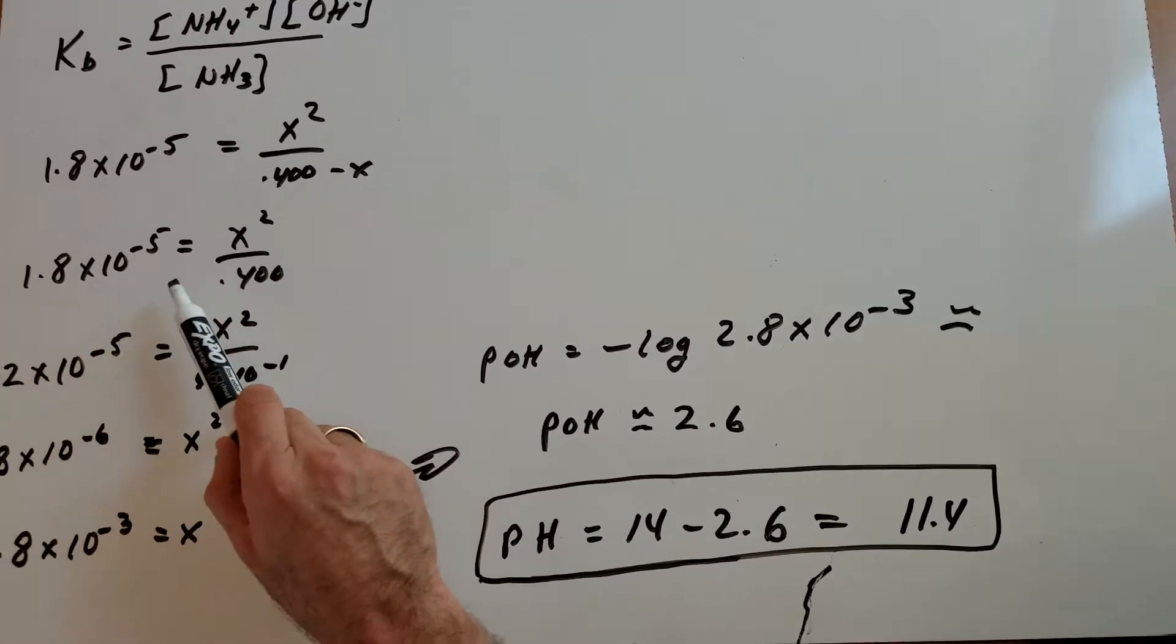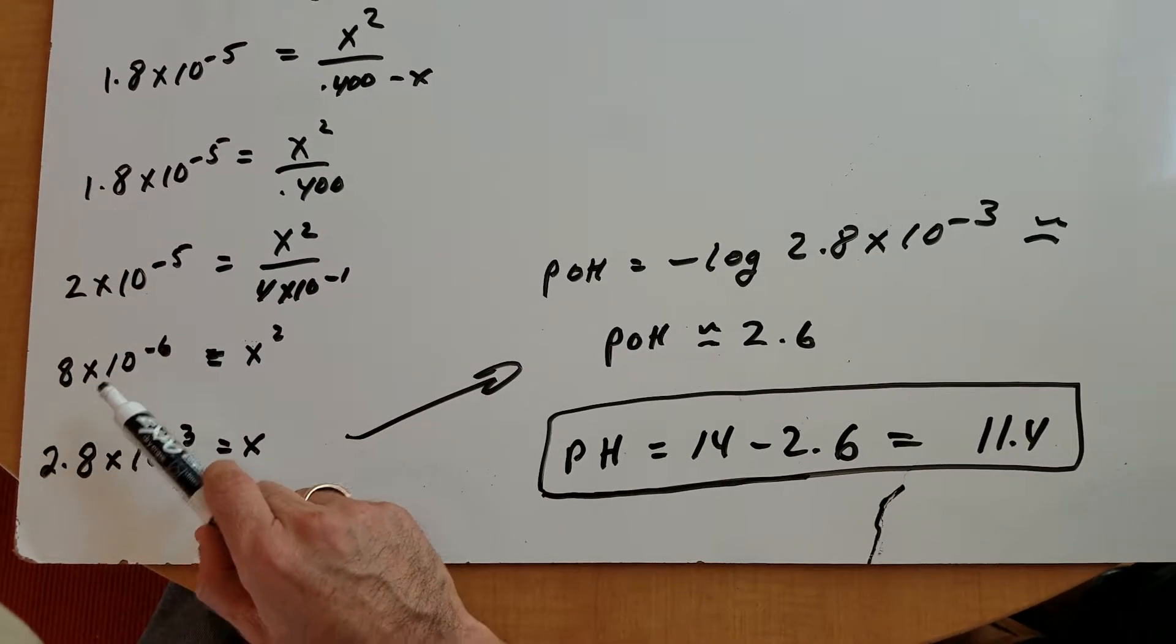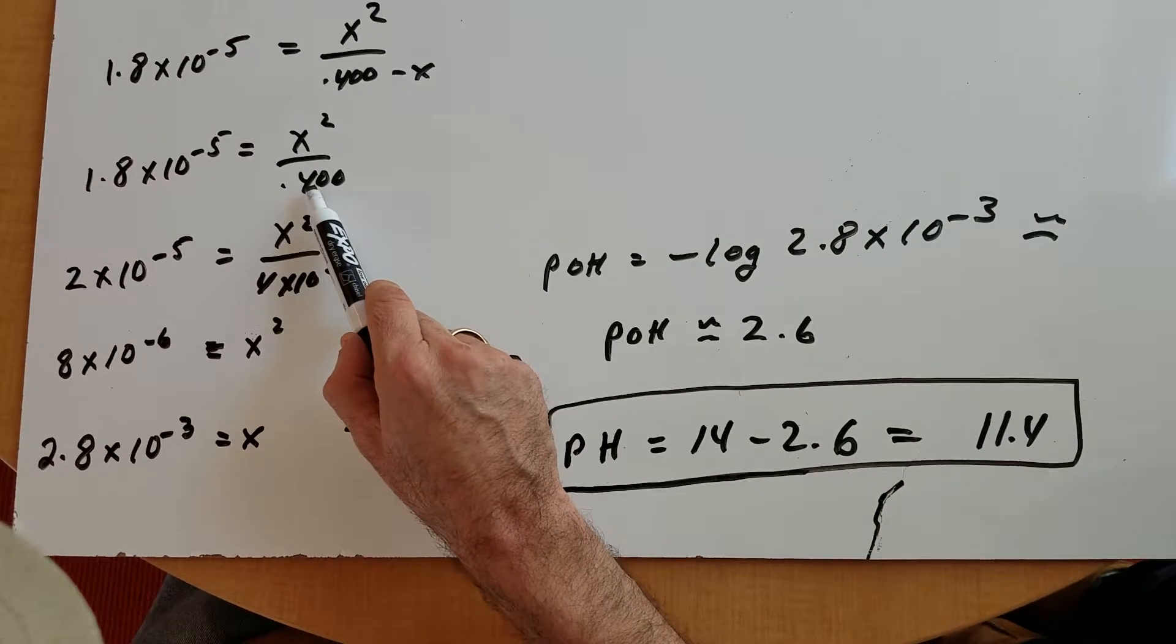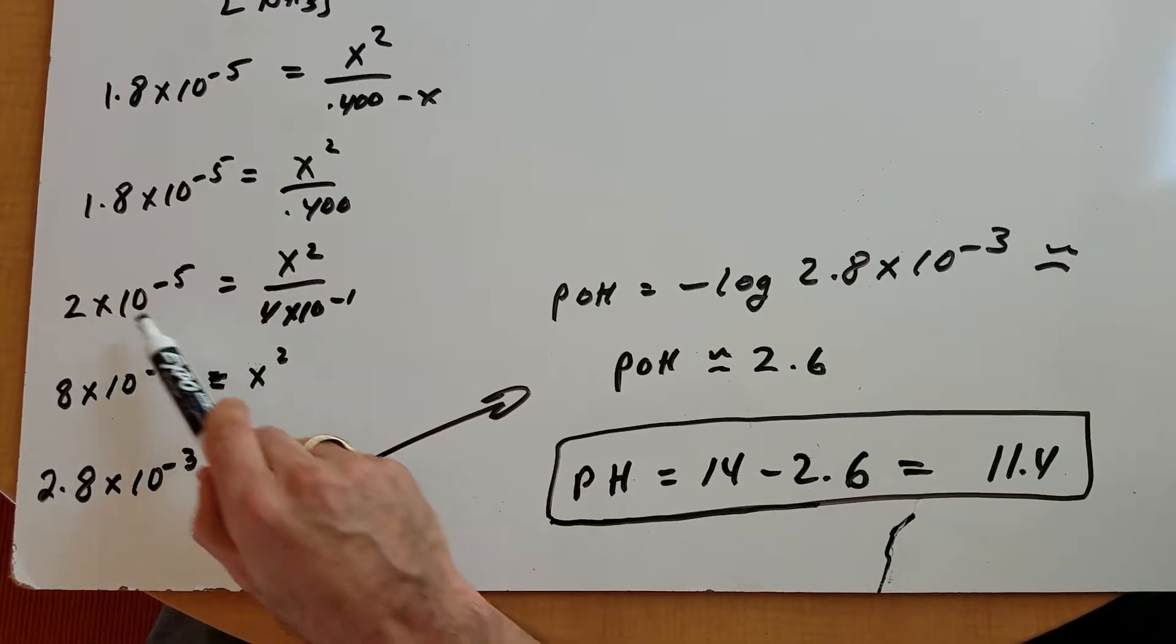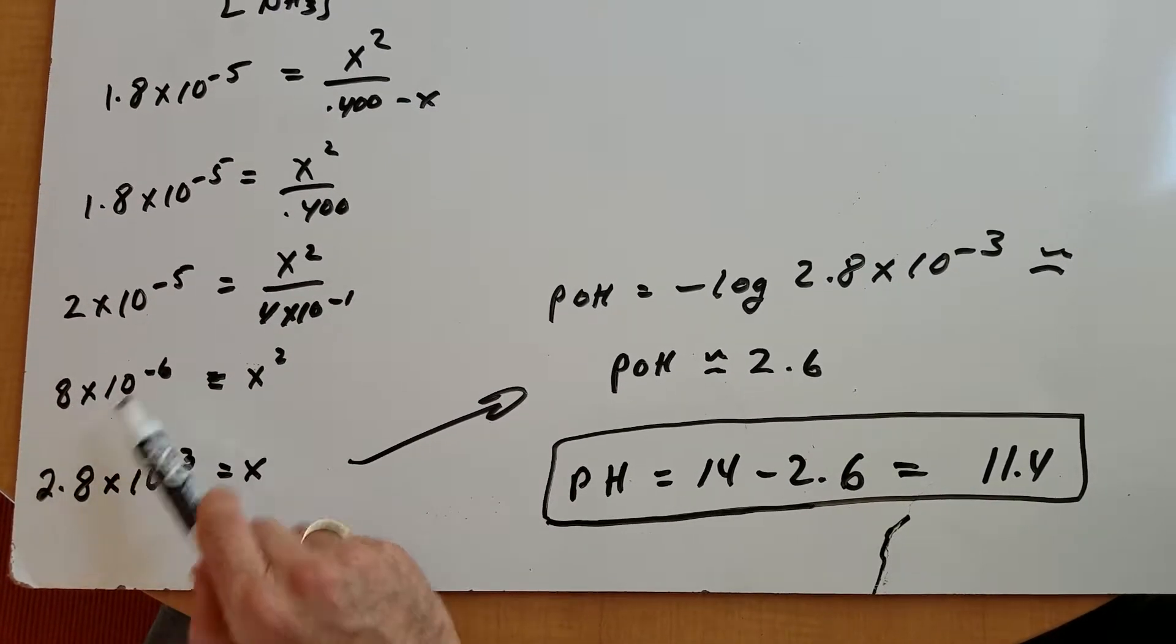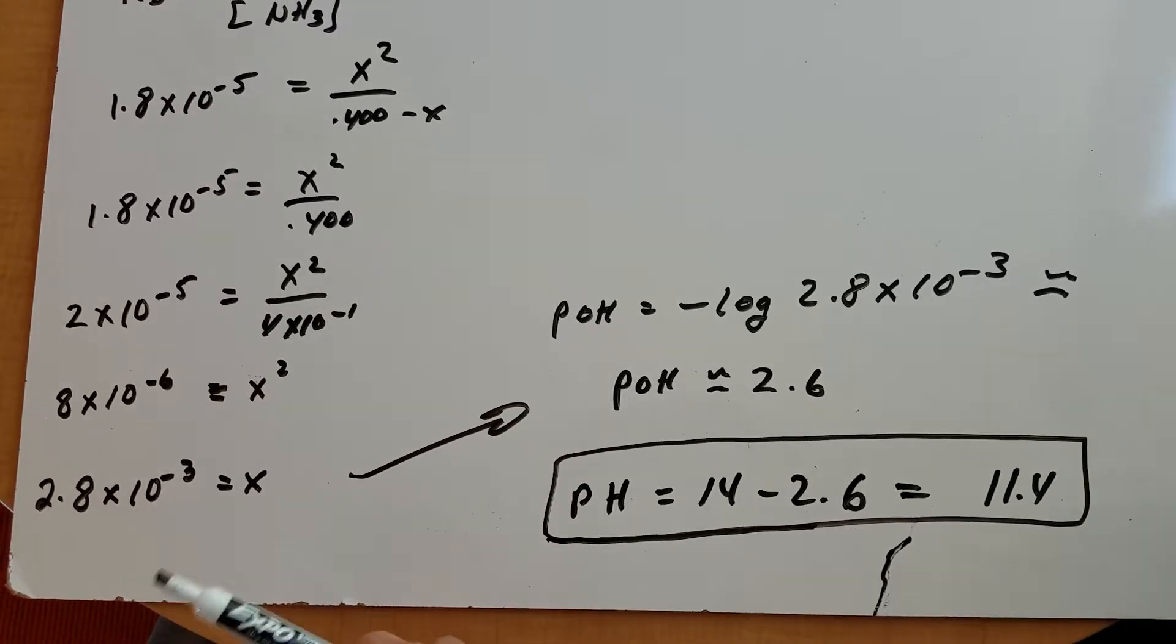To make things a little easier, I rounded off 1.8 to 2 and I'm going to rewrite 0.400 as 4 times 10 to the minus 1. I cross multiply and that gives me 8 times 10 to the minus 6 equals x squared.